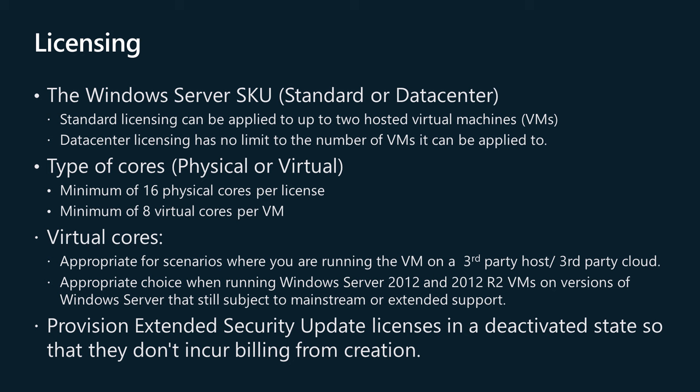If you choose to license based on physical cores, licensing requires a minimum of 16 physical cores per license. If you choose to license based on virtual cores, licensing requires a minimum of 8 virtual cores per virtual machine. Licensing virtual cores is appropriate for scenarios where you may be running the VM on a third-party host or third-party cloud, and also when running Windows Server 2012 and 2012 R2 VMs on versions of Windows Server still subject to mainstream or extended support. If you're licensing a server used for virtualization, Standard licensing can be applied to up to two hosted virtual machines, whilst Data Center licensing has no limit to the number of VMs it can be applied to. Depending on the number of VMs hosted, it may make sense to choose the Data Center license instead of the Standard license.